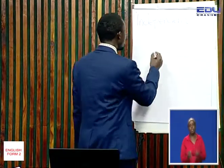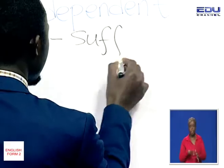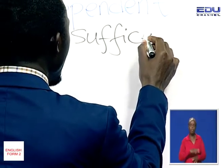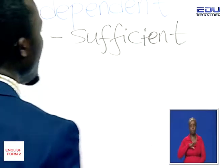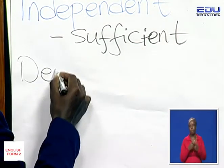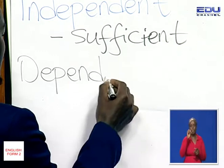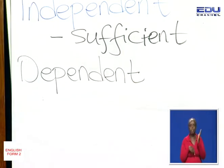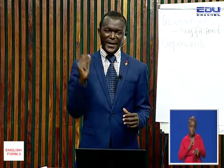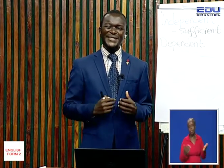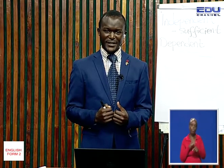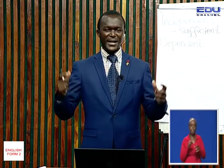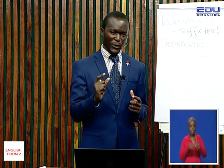Independent simply means self-sufficient. But dependent, on the other hand, means that cannot stand on its own — depends on another. So when someone is dependent, it means that they cannot survive without support from others.